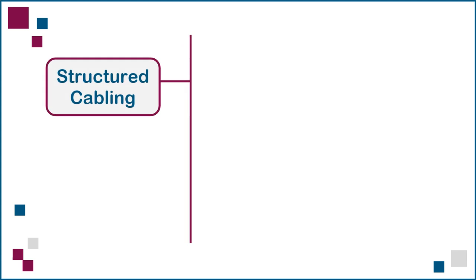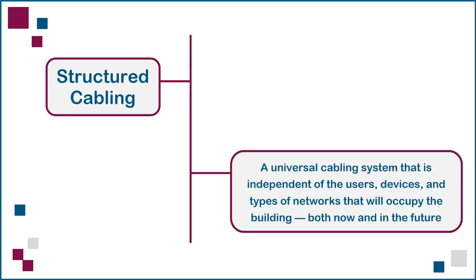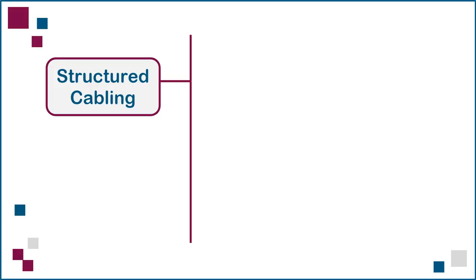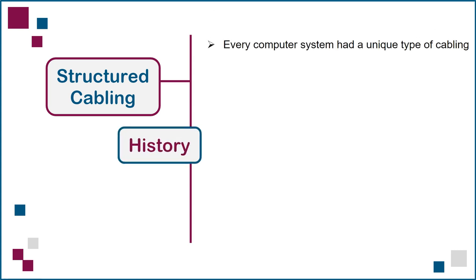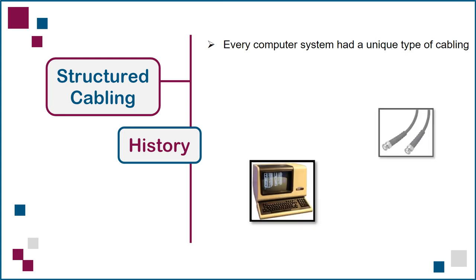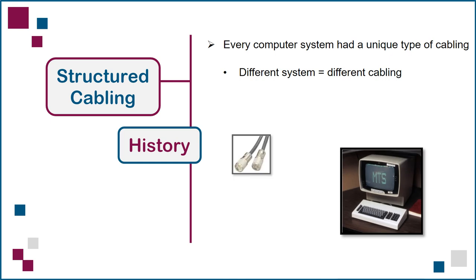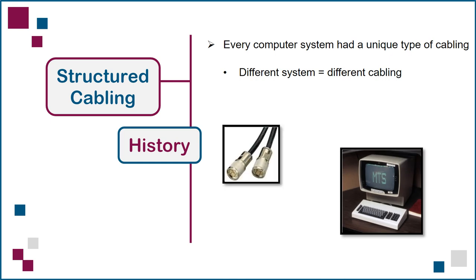Structured cabling proposes the installation of a universal cabling system that is independent of the users, devices, and types of networks that will occupy the building, both now and in the future. In order to appreciate the enormous benefits of this approach, you have to go back in time to a period when every computer system had a unique type of cabling. If you wanted to buy a different system, you had to rewire your space, which could span an entire building.